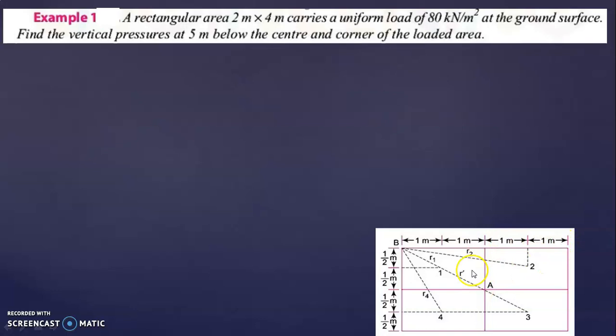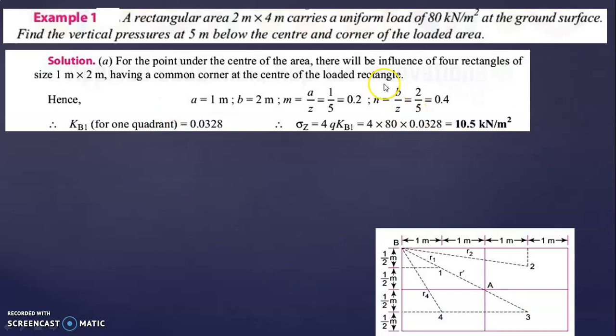This is 2 meter and this is 4 meter. Neglect all inner lines and just consider the outer rectangle. You have to calculate one point at A — the center — and another point at B — the corner of the loaded area. To find the stress at the center, there will be influence of 4 rectangles of size 1 meter by 2 meter having a common corner at the center of the loaded rectangle.